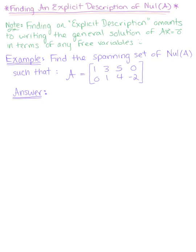To get started, if we're asked to find the spanning set of the null of matrix A, given this 2 by 4 matrix — 1, 3, 5, 0 and 0, 1, 4, negative 2 — the first thing we need to do is find a parametric description for the homogeneous equation.